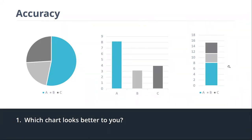The problem with stacked bar charts is they make it difficult to read what's going on. The bottom bar starting at zero is easy enough, but then the next area goes from, say, eight to about eleven or twelve, and we have to subtract eight from eleven and compare that to the first bar. That's a lot of extra mental work that we don't need to do with a regular side-by-side bar chart.